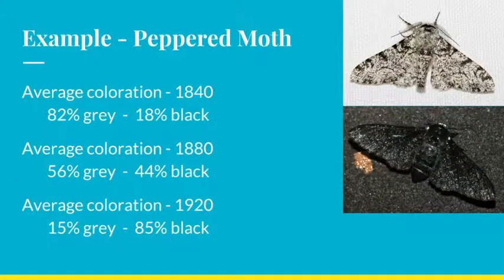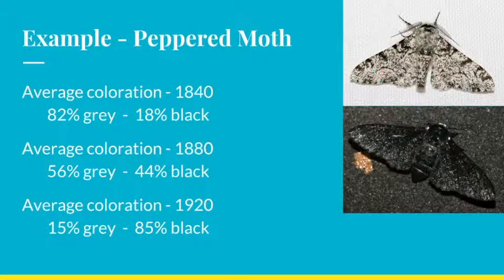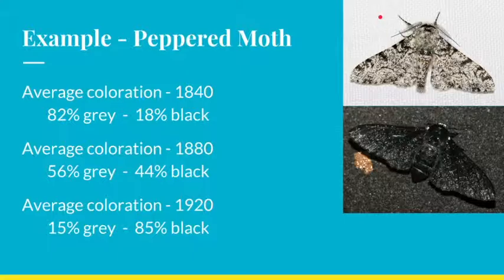Let's look at another example that's often used to describe natural selection and evolution. In England, there is a moth called a peppered moth — it's called that because it has a mix of gray and black pigments all over its body. Normally, a peppered moth lives on the bark of trees, which have the same gray and black peppered coloration. However, over time that environment changed. Around 1840, humans started burning a lot more coal to make electricity. When they burned coal, their factories produced a lot of soot — a black, smoky, oily residue — which landed on the trees and made them much more black than the gray they used to be. So over time, that environment changed, and the peppered moths also changed.